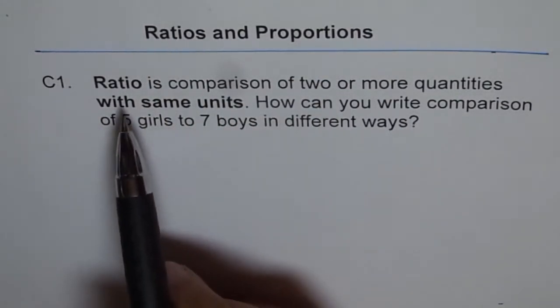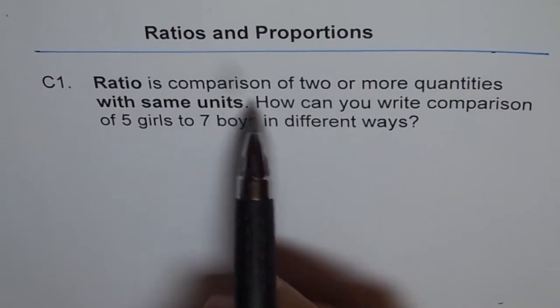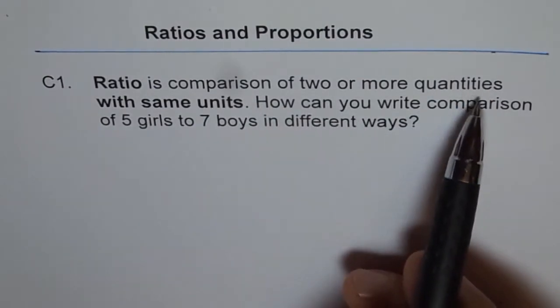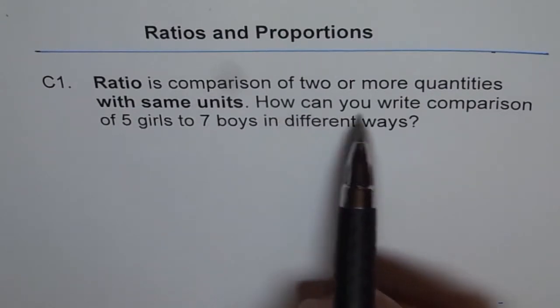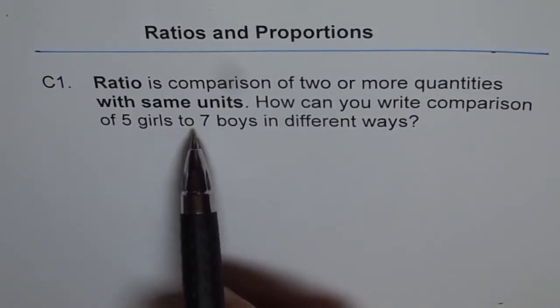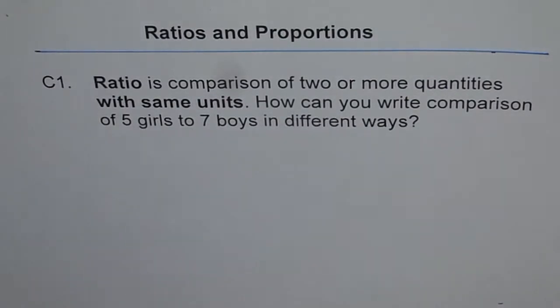C1: Ratio is comparison of two or more quantities with same units. How can you write comparison of five girls to seven boys in different ways? So that is the question related to ratios. Let's first understand the definition of ratio.